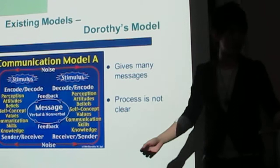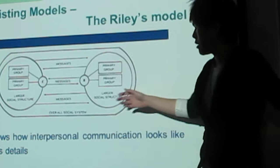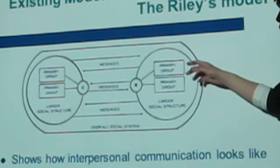The next model is another raw list model. This model shows how interpersonal communication looks like, but it has less detail, so it is also not very clear.